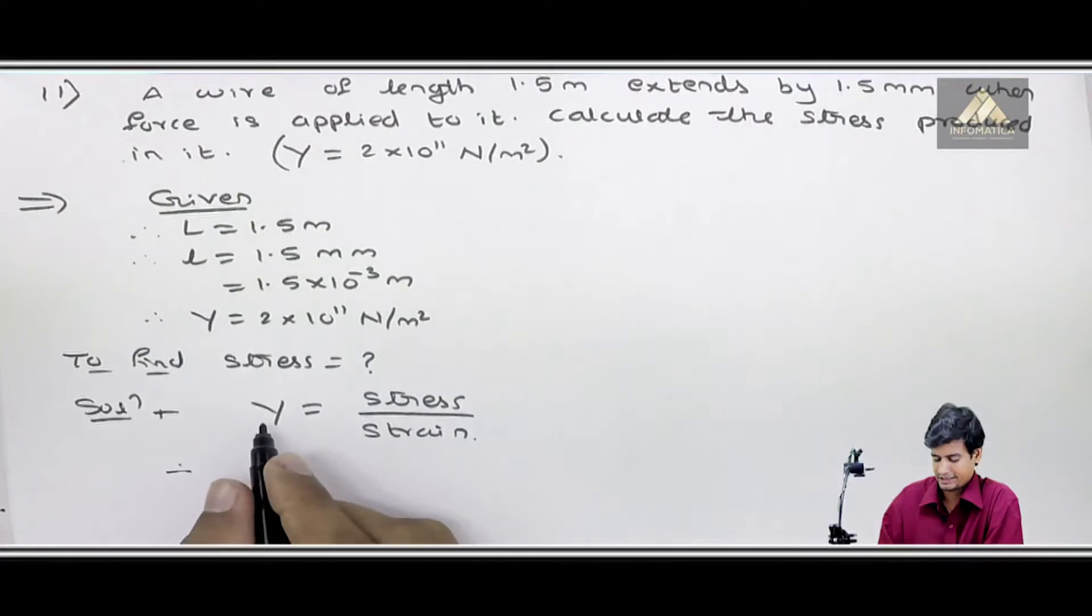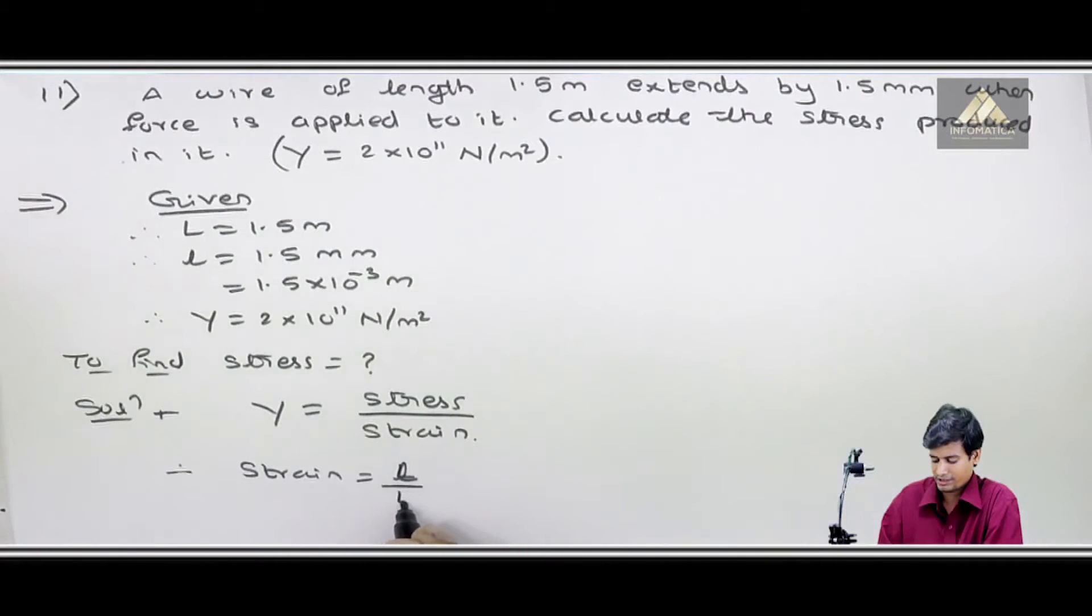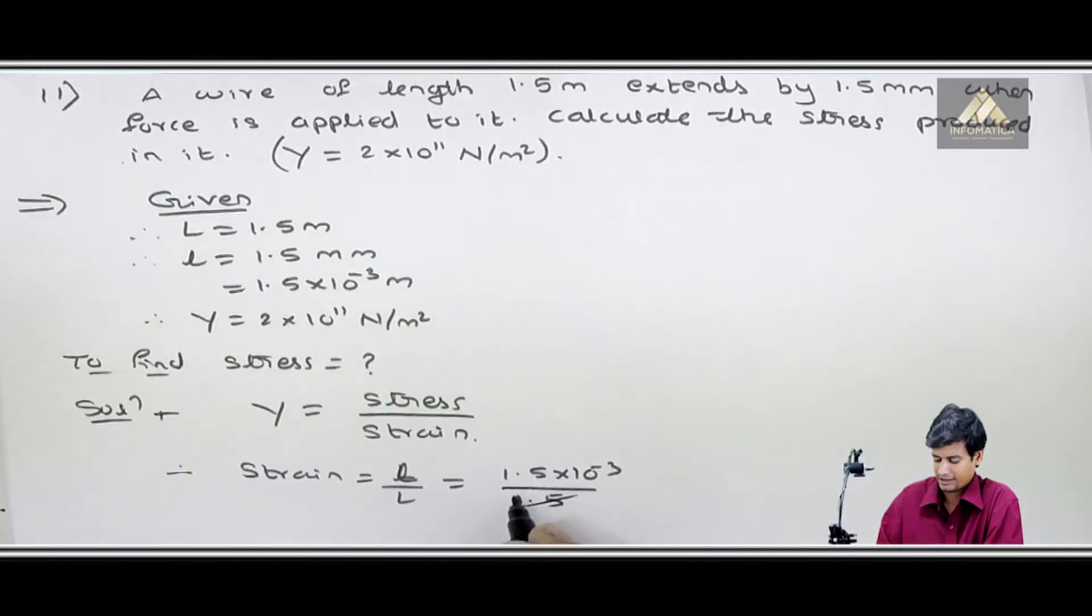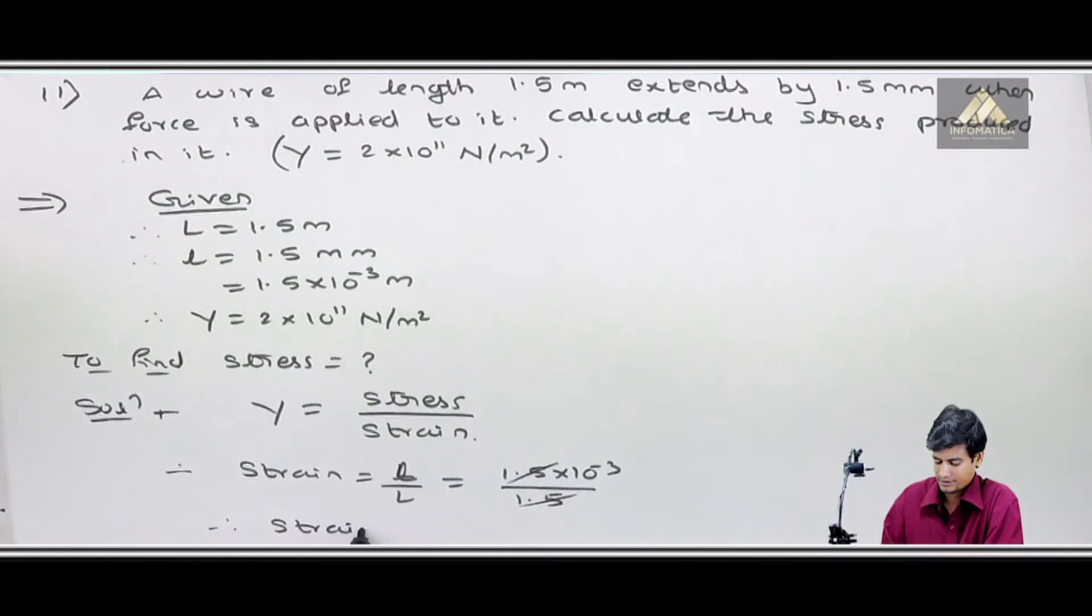First, Young's modulus is given, stress needs to be found, so I need to find strain first. Strain formula is change in length to original length. Change in length is 1.5×10⁻³ and capital L is 1.5. These cancel, so strain equals 10⁻³.